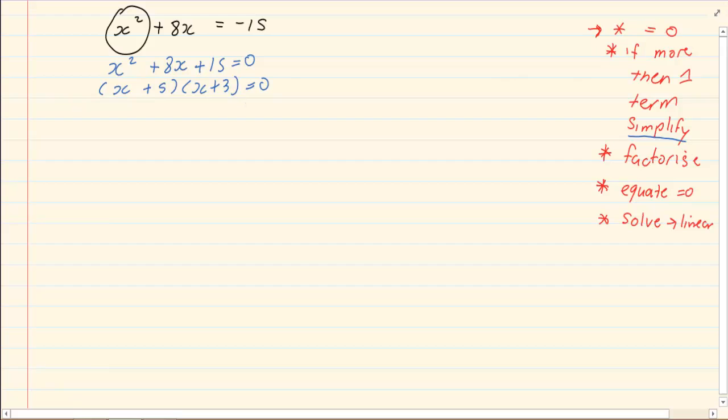Now we are going to equate each bracket to 0. So we have x plus 5 is equal to 0, x plus 3 is equal to 0. Then we solve each equation, x is equal to minus 5, x is equal to minus 3.